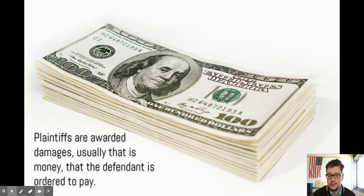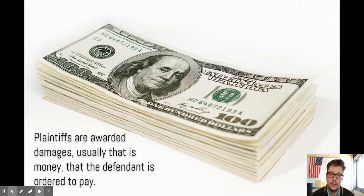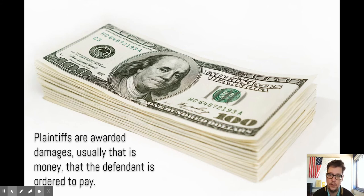Plaintiffs are awarded damages, so that's usually going to be money, and sometimes the defendant is also ordered to do something or undo something. In the case of a toxic tort — that's strict liability — a company found polluting a river or that has buried toxic waste will not only be forced to pay the plaintiffs for their damages, but may also be forced by court order to dig up the toxic material or stop polluting in some way.